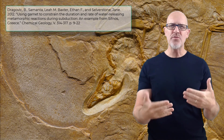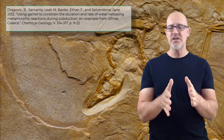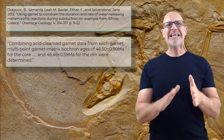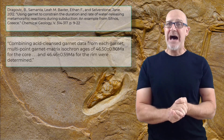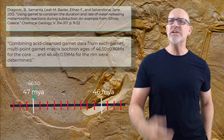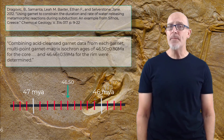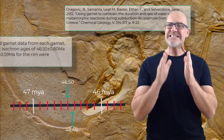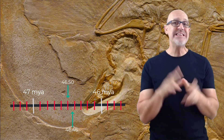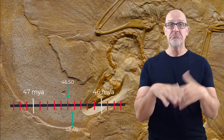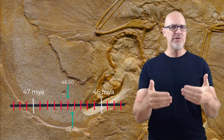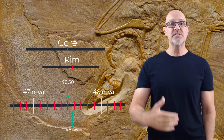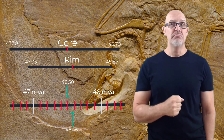In this paper, scientists dated both the core and the rim of two large garnets with a diameter of about 15 millimeters. Combining acid-cleansed garnet data from each garnet, multi-point garnet-matrix isochron ages — essentially radioisotope dating — of 46.5 ± 0.8 million years for the core and 46.46 ± 0.59 million years for the rim were determined. These data surprised the scientists because the ages of both the core and the rim are, geologically speaking, almost the same. When you take the uncertainties into consideration, the ages of the core and the rim overlap, suggesting that these garnets could have formed basically instantly.